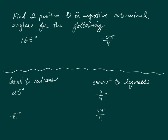In the first example you are asked to find two positive and two negative coterminal angles for 165 degrees and negative 5π/4. Note the difference between these two: negative 5π/4 is in radians, which is important because coterminal angles have units. If you're given degrees you need to use degrees, and a full revolution is 360 degrees.